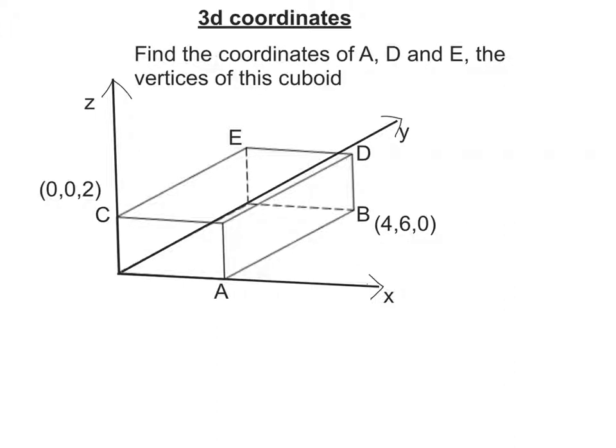If we look at this coordinate here for C, the first number tells us our X, the second number our Y, and the last number our Z. So the point C is 0 along the X axis, 0 along the Y, and 2 up to C.